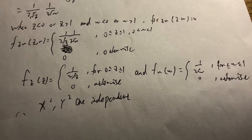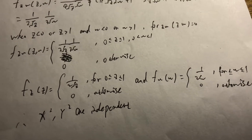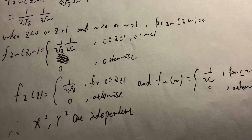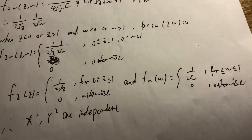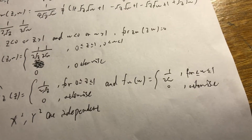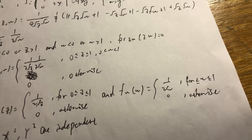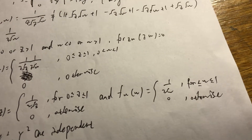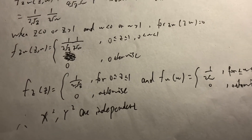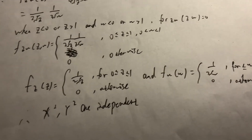So f_Z(z) equals 1 over (2 sqrt(z)) for z between 0 and 1, and 0 otherwise. And f_W(w) equals 1 over (2 sqrt(w)) for w between 0 and 1, and 0 otherwise. So obviously, x squared and y squared are independent. Thank you.